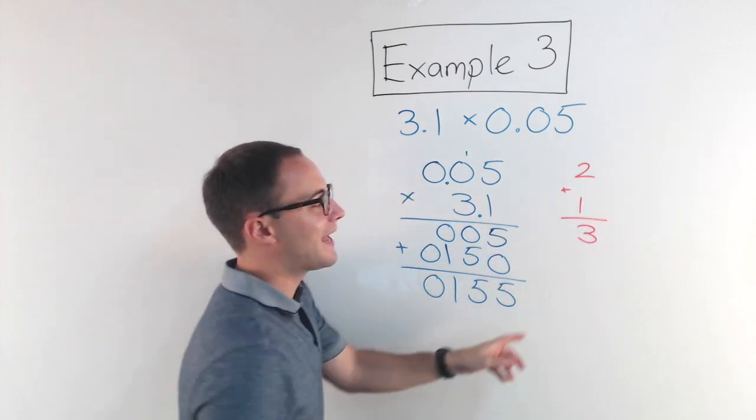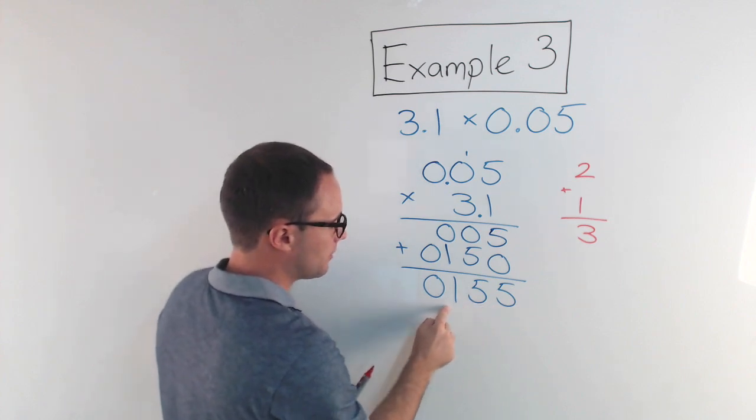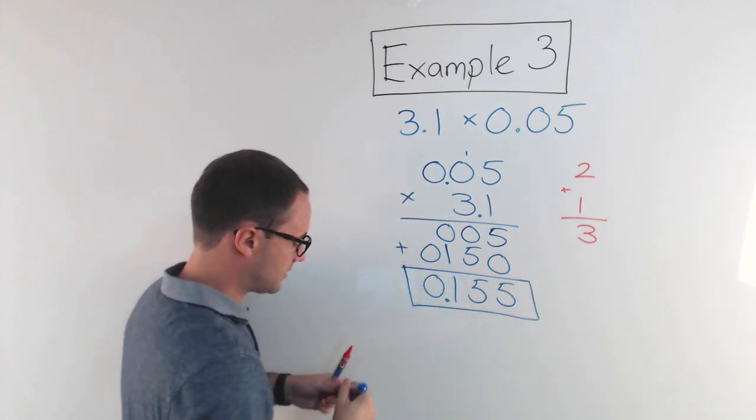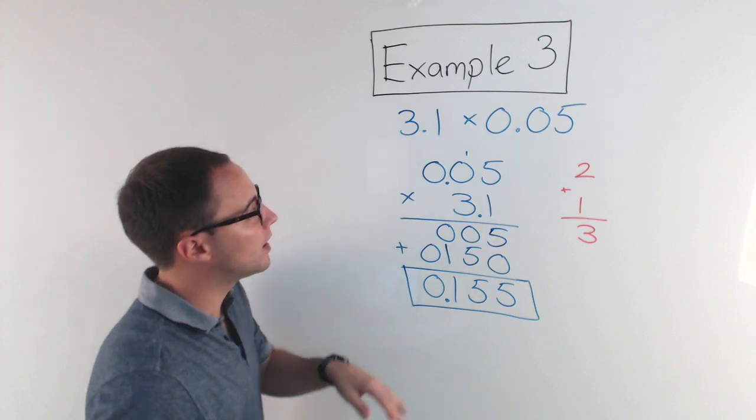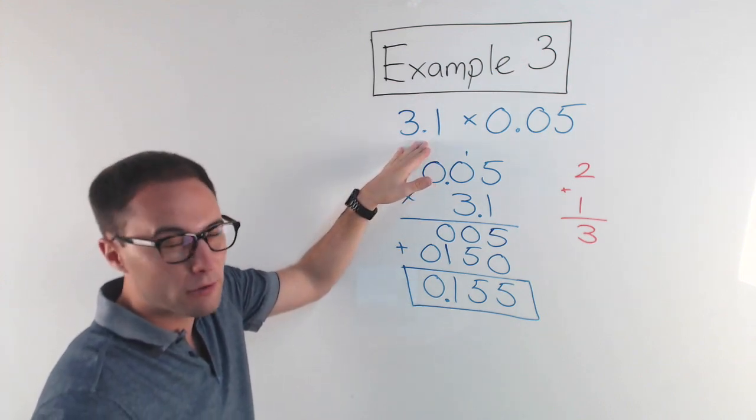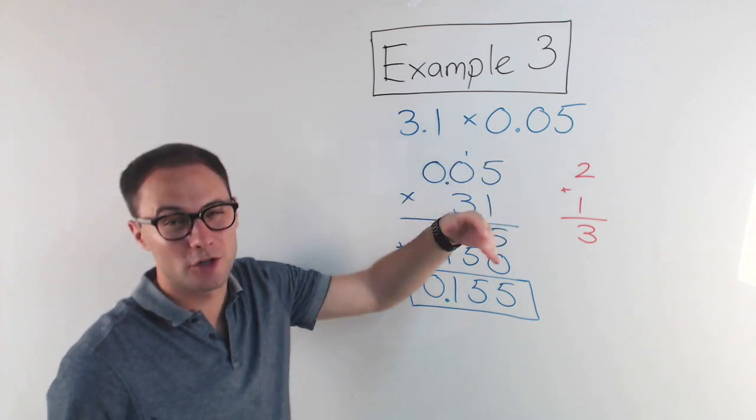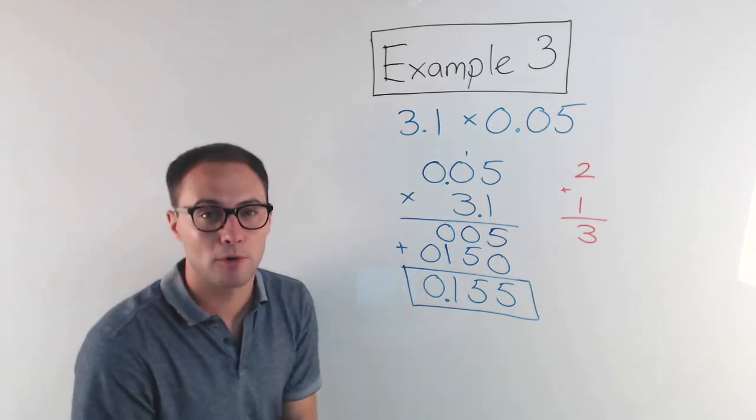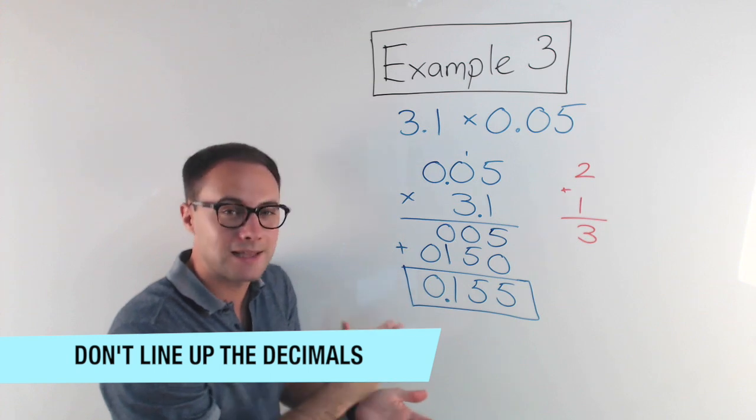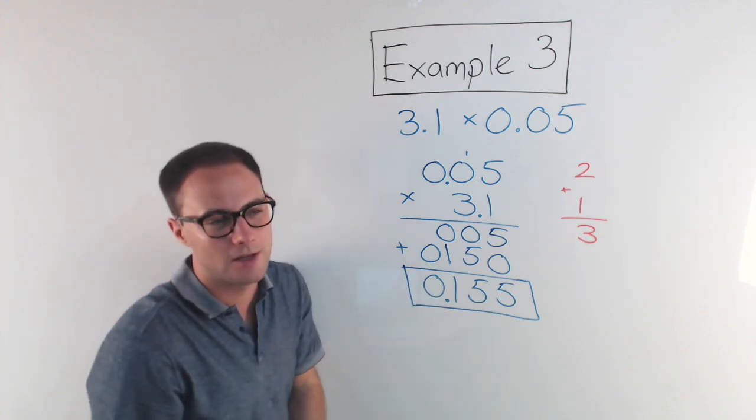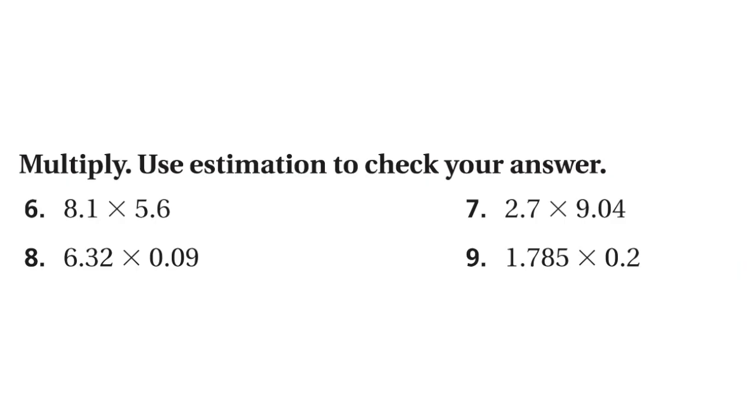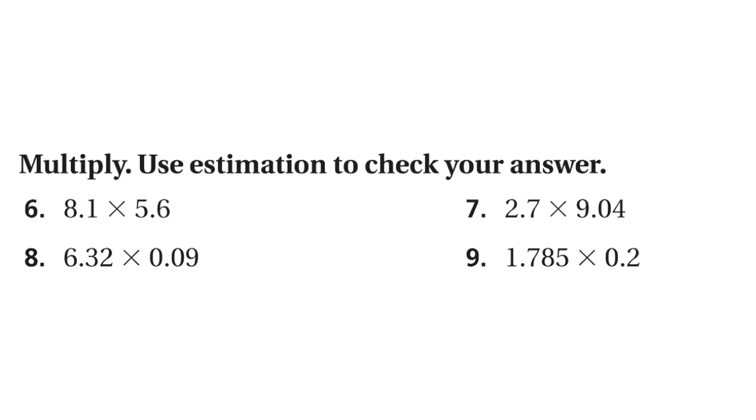Now the last step is to count my decimal places. This here, zero point zero five, has two. That has one. Add them together, my answer should have three decimal places. So one, two, three. My decimal point goes right there, and that is my answer. Now if I want to check, if I want to estimate, well, if I'm going to estimate, that would be—round to three—times that's very close to zero, so three times zero is zero. Is my answer pretty close to zero? Yeah, it is. So that's the last example. Again, remember, when you're multiplying decimals, do not line them up. Sometimes they will line up just, you know, because they have the same decimal places, but they don't need to be. Okay, so that's the main difference. Here's some more to try on your own. Thank you for watching, and as always, if you like this video, please subscribe.